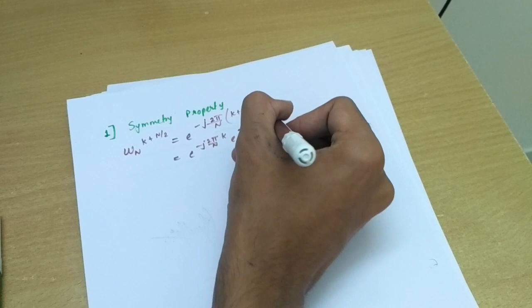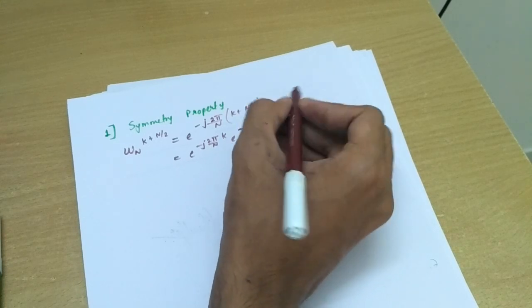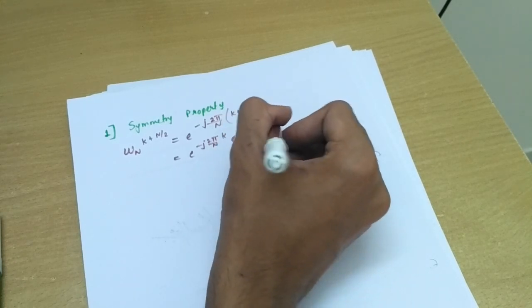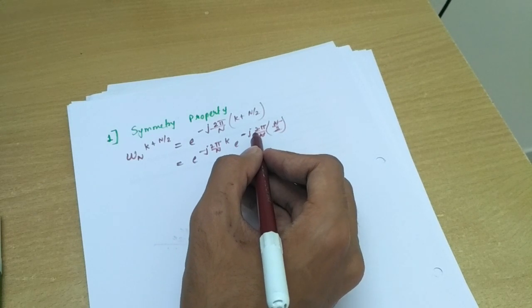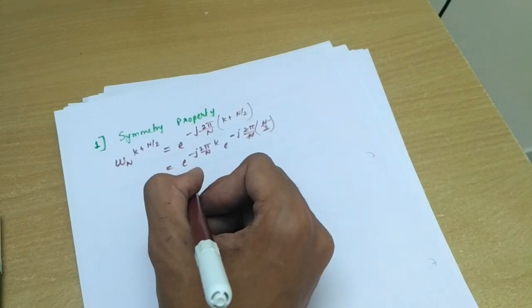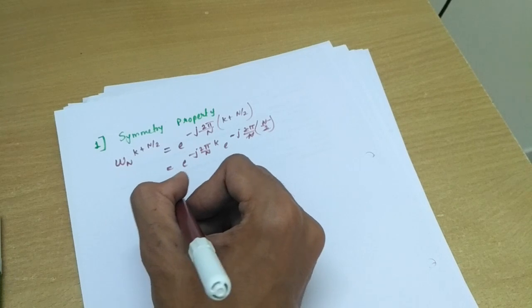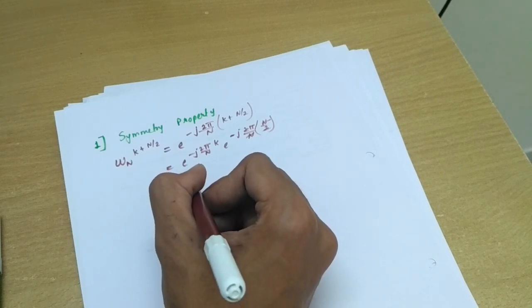2π by N into k plus N by 2 minus j, 2π by N into N by 2. So here N will cancel, 2 will cancel, and we get e to the minus jπ which is nothing but minus 1.